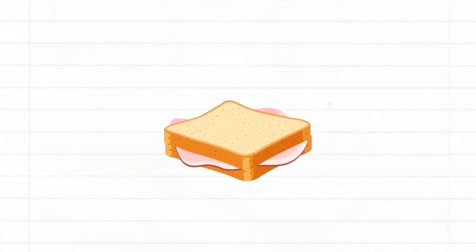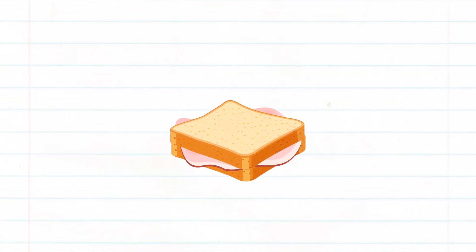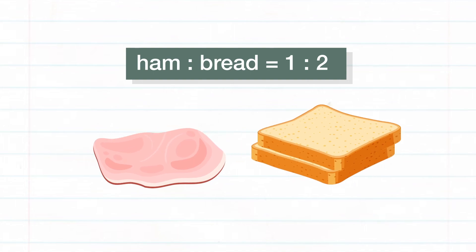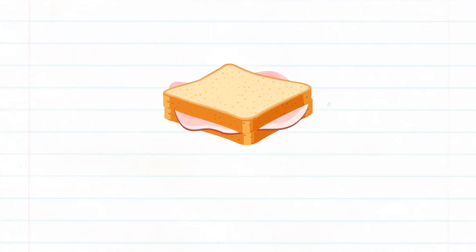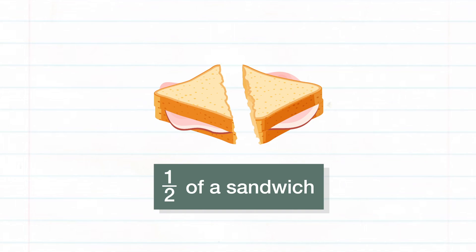Let's say we have this sandwich. If I say that the ratio of the pieces of ham to the slices of bread is 1 to 2, then that means there's one piece of ham for every two slices of bread in a sandwich. But if I say I'd eat one half of a sandwich, it means I would cut the sandwich into two and eat only one of the pieces.